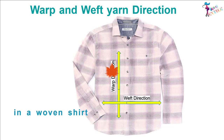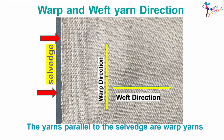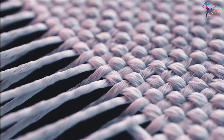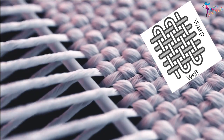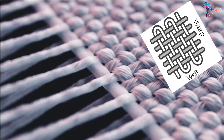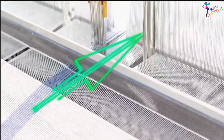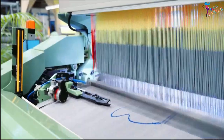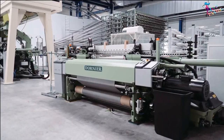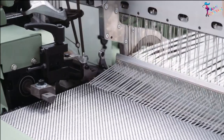Warp and weft are the technical names of the yarns in a fabric. Woven fabrics are made of two sets of yarns: warp yarns and weft yarns. The yarn that lies parallel to the fabric edge is called the warp yarn. The warp threads are the support network for the weft. This is also known as the machine direction, because it's the direction the threads run on the loom.